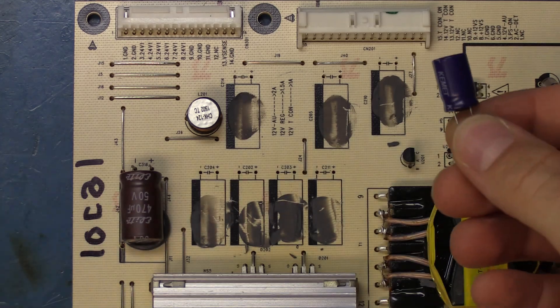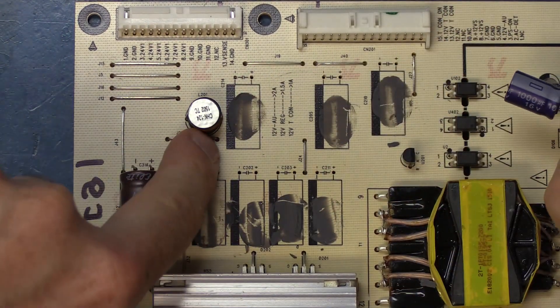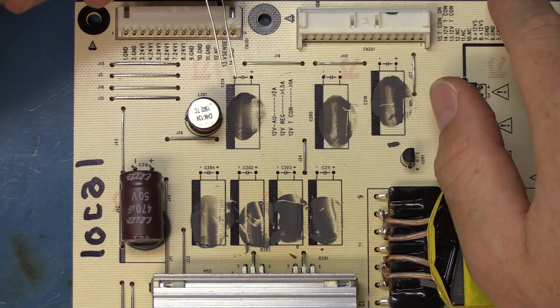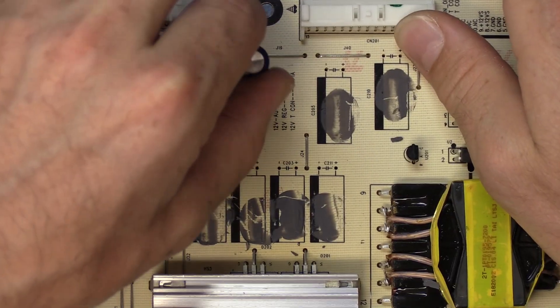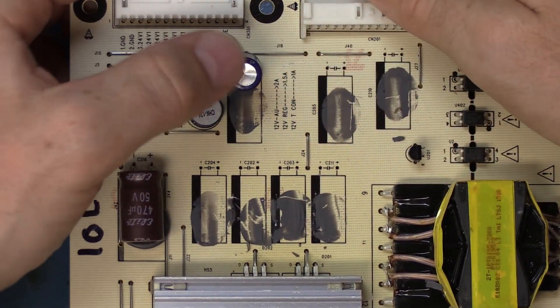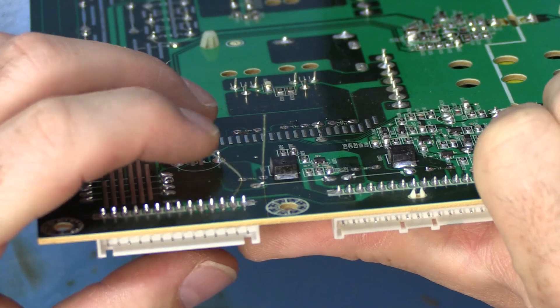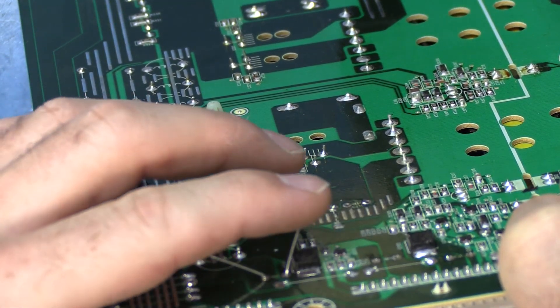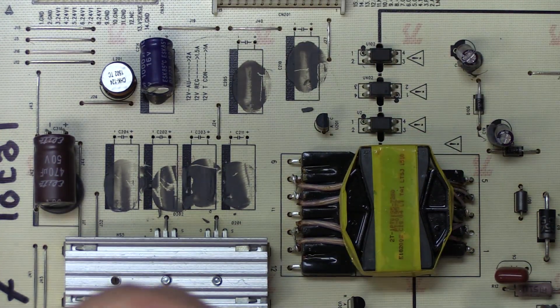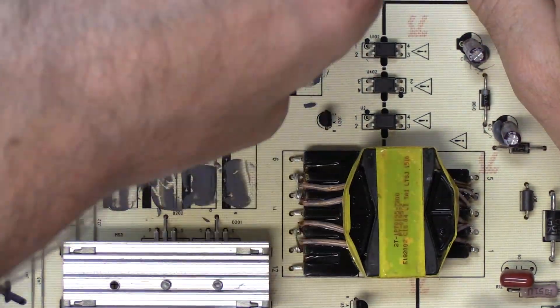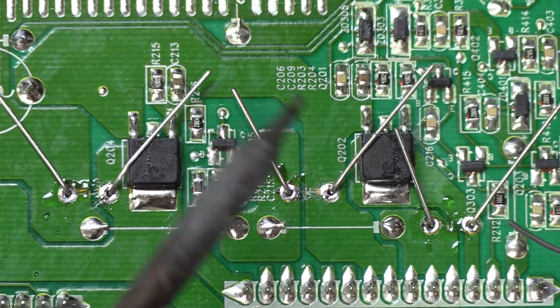All right so next we're going to go ahead and feed our components through. Our replacement capacitors are labeled with a negative. On the board we have a black bar on the negative side so that's how we know how to line it up. There's also a negative sign and a positive sign next to the holes for the leads. Okay we're just going to feed it through bend it over and on the back side I'm going to go ahead and bend the pins out like that. And we're going to do that six more times.